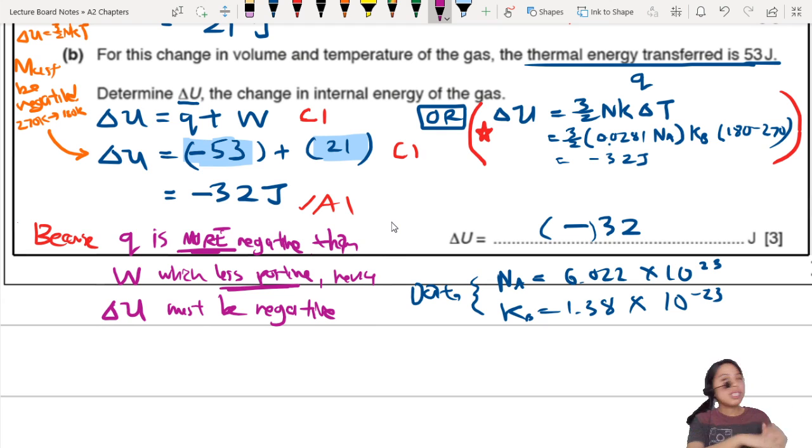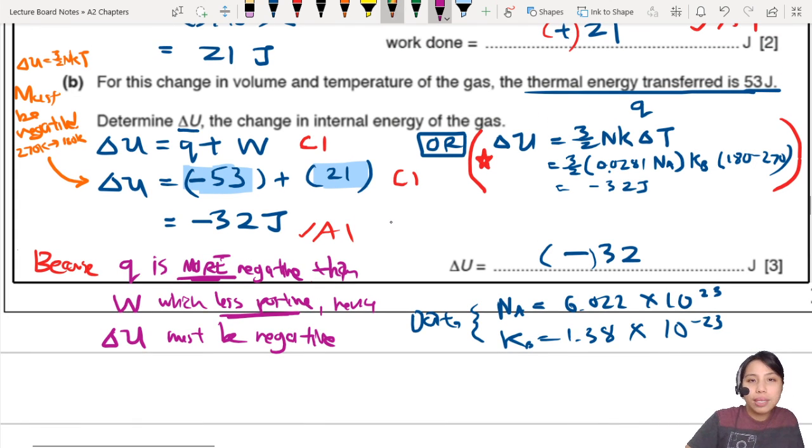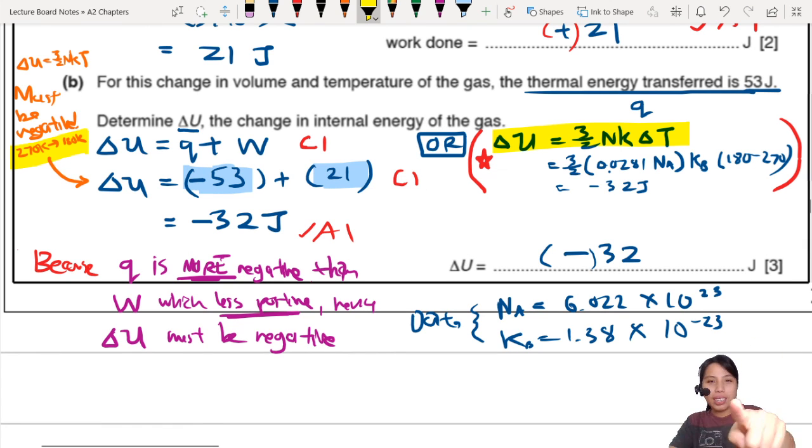You need to think very carefully of the signs. You cannot simply assign, oh, must be positive, oh, must be negative. No, no, no, no, use a temperature to help you decide what the sign of U is. Check, maybe, with this equation, everything, just to make sure you got the correct signs. Okay? So, that's all for this question. I will see you in the next one.